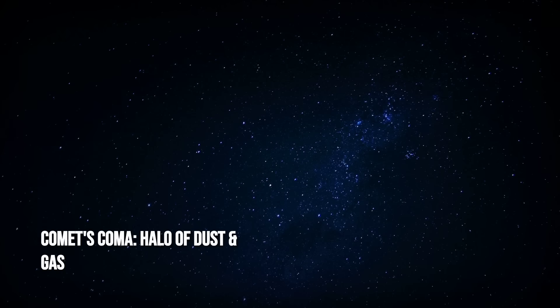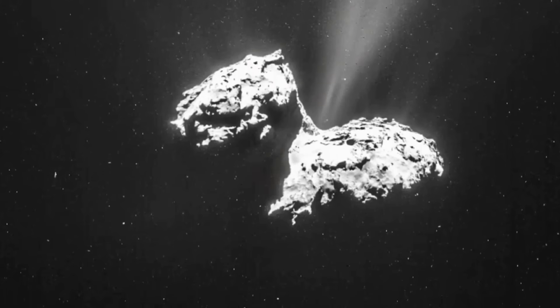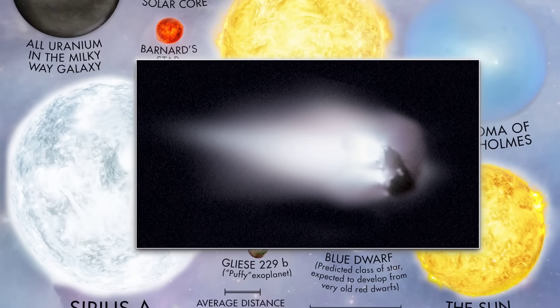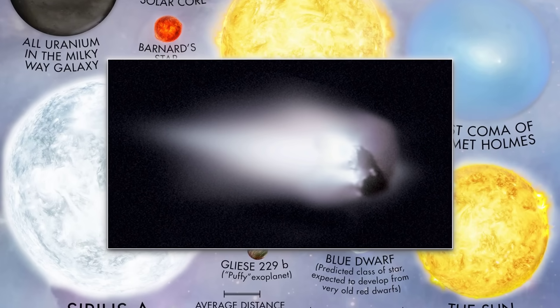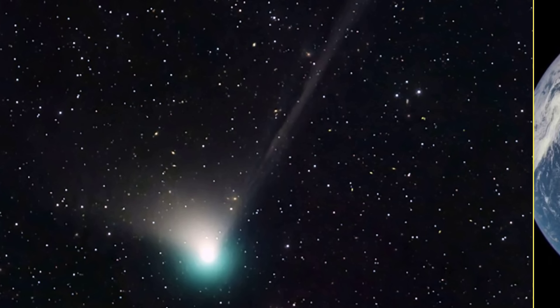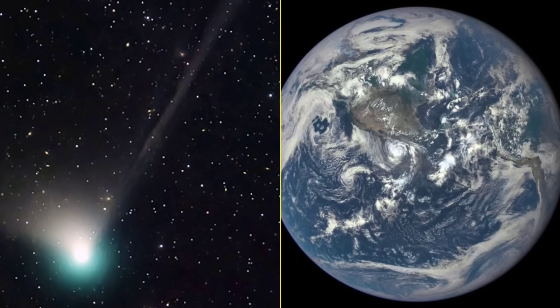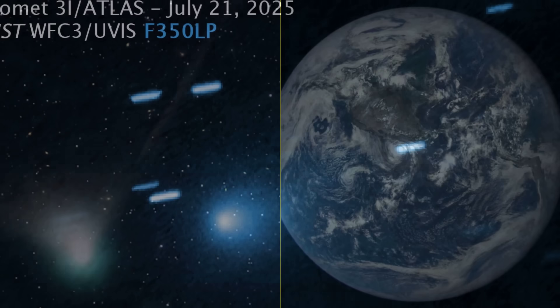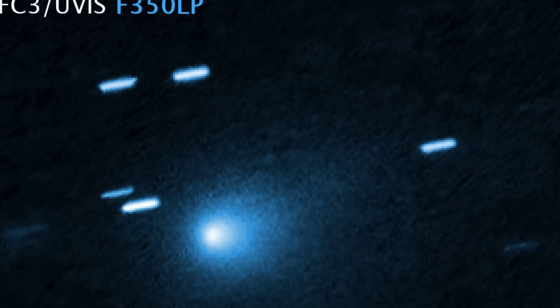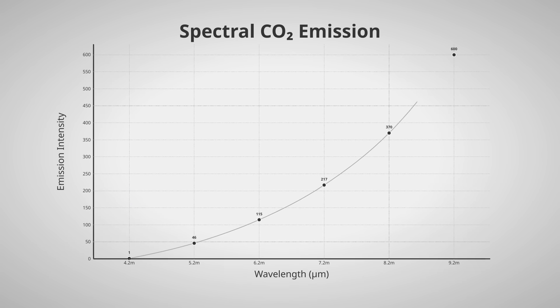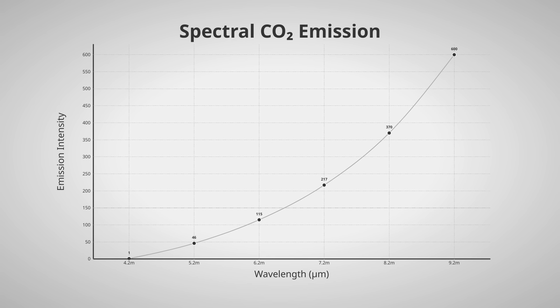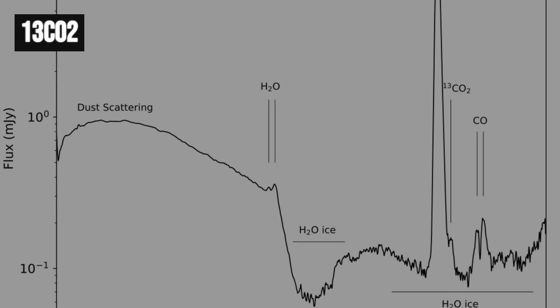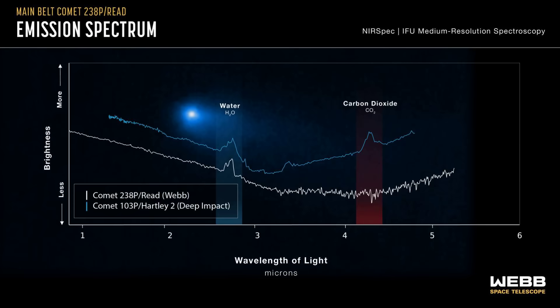But around that tiny center, the coma, the cloud of gas and dust boiled off by sunlight, ballooned to a scale that dwarfs most solar system comets. At times, the coma stretched out to hundreds of thousands of kilometers, even twice the diameter of Earth. And it's not just size. Spectra show this coma is rich in carbon dioxide gas, far more than is typical. That's a chemical fingerprint seen in only the rarest solar system comets.